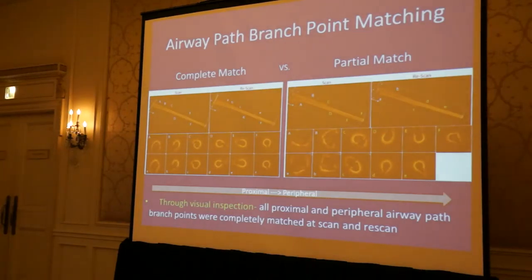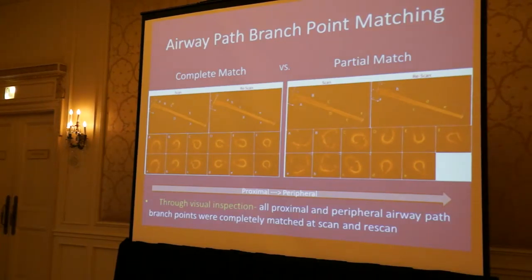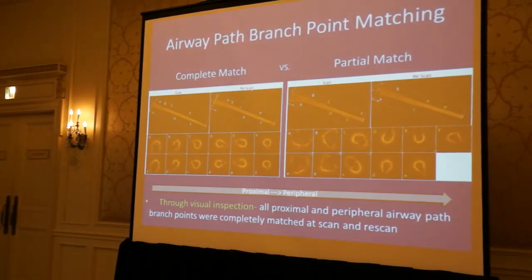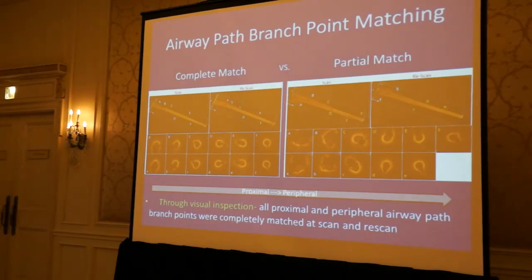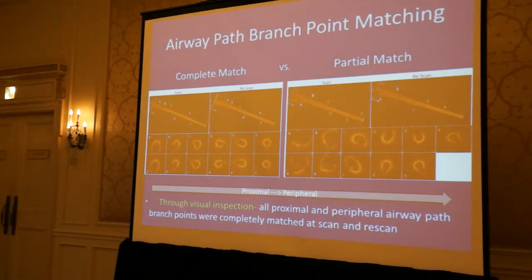Through visual inspection, the proximal and peripheral regions of the airway are determined as being a complete match, partial match, or unmatched. The images on the left represent the scan — the first insertion of the probe — and the images on the right represent the re-scan. For an airway branch to be deemed a complete match, all of its branch points must be identified and matched. If even one branch point is a partial match or unmatched, then the entire airway branch is classified accordingly.